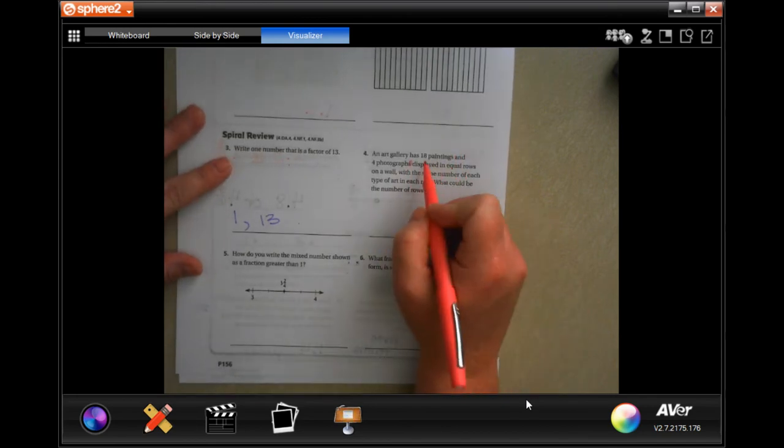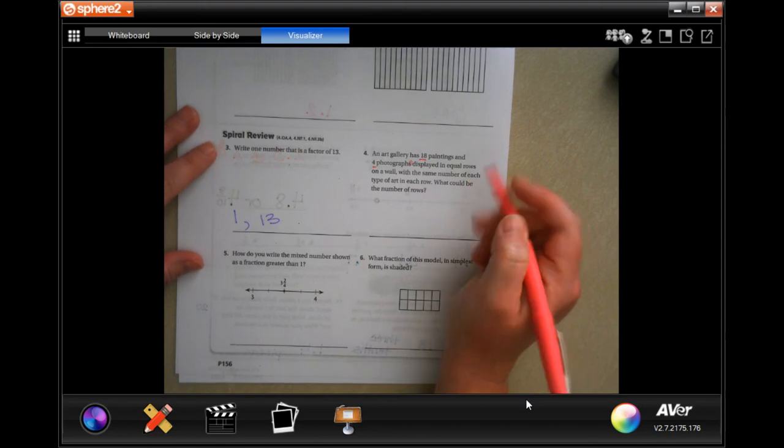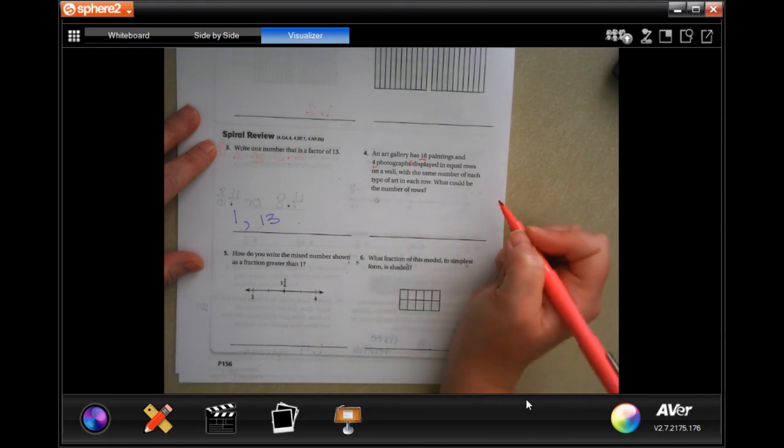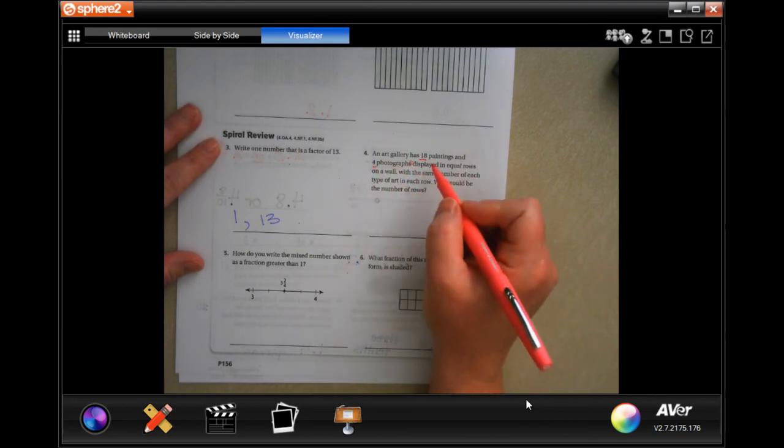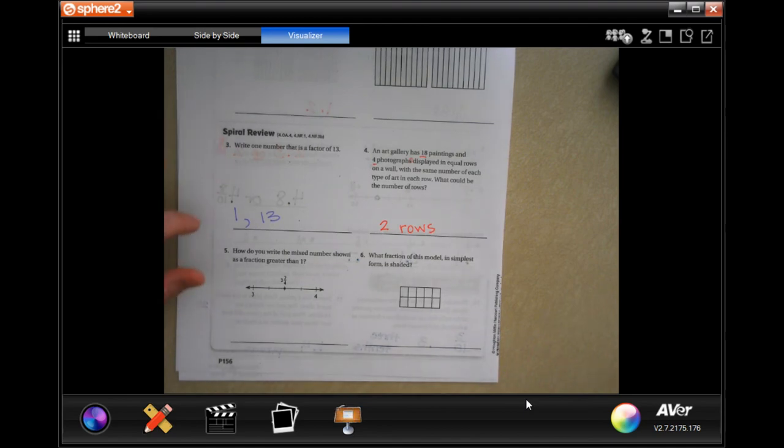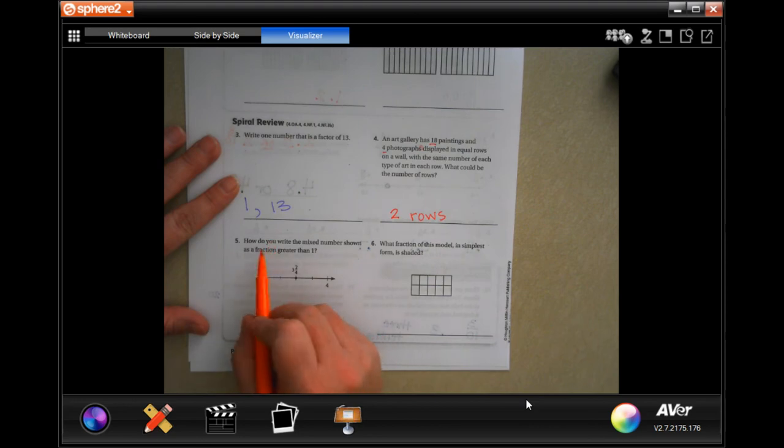An art gallery has 18 paintings and four photographs displayed in equal rows on a wall with the same number of each type of art in each row. What could be the number of rows? So I would say that the only number that goes into 4 and 18 evenly is going to be two, so I would put two rows.